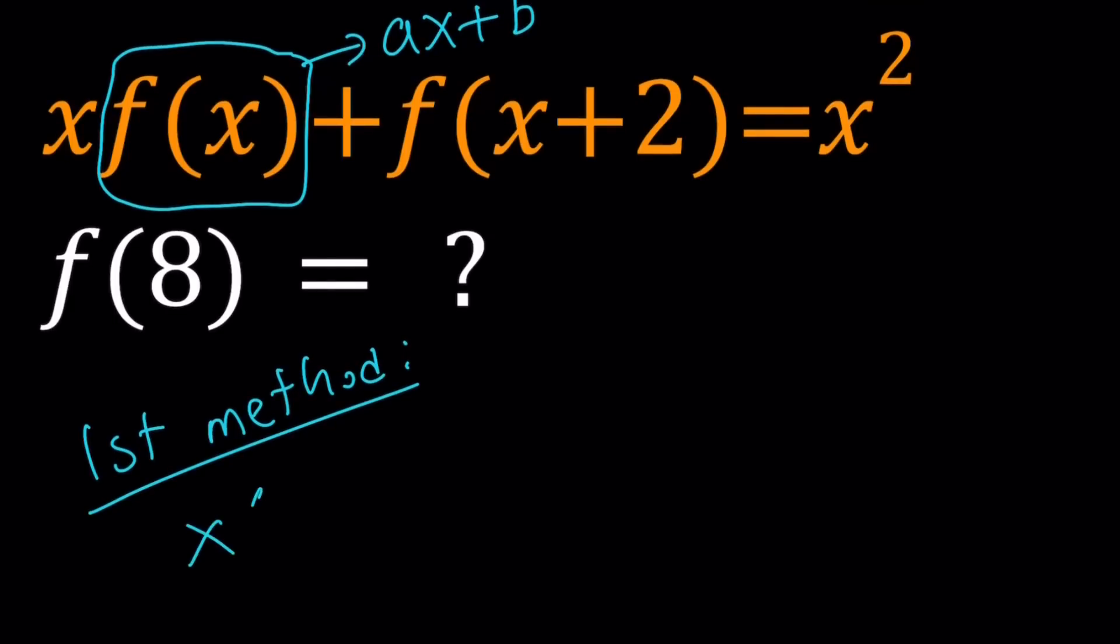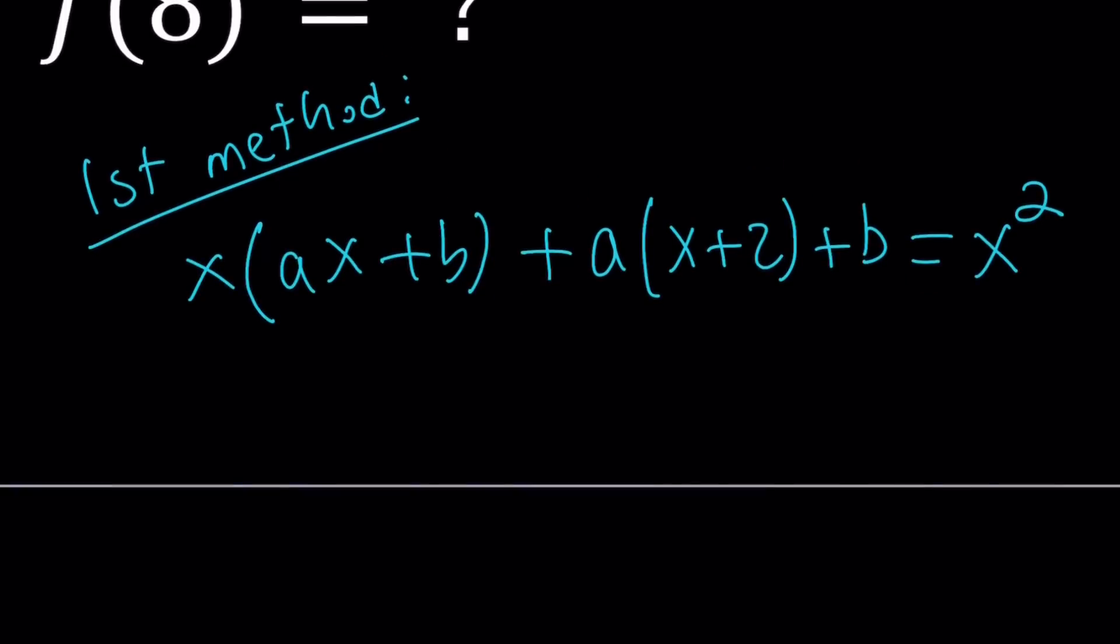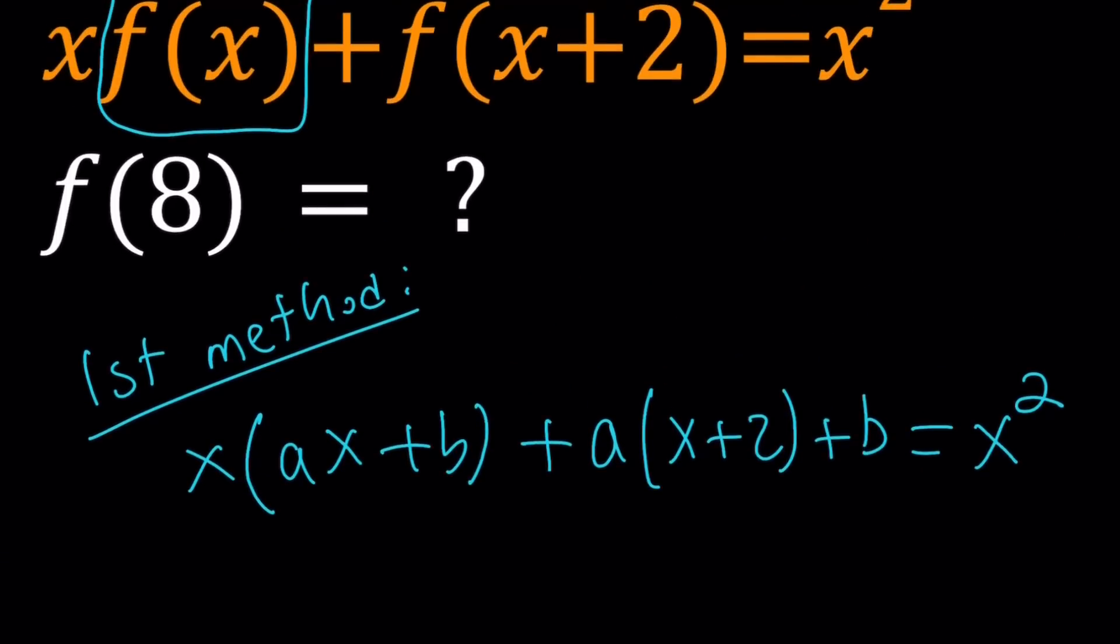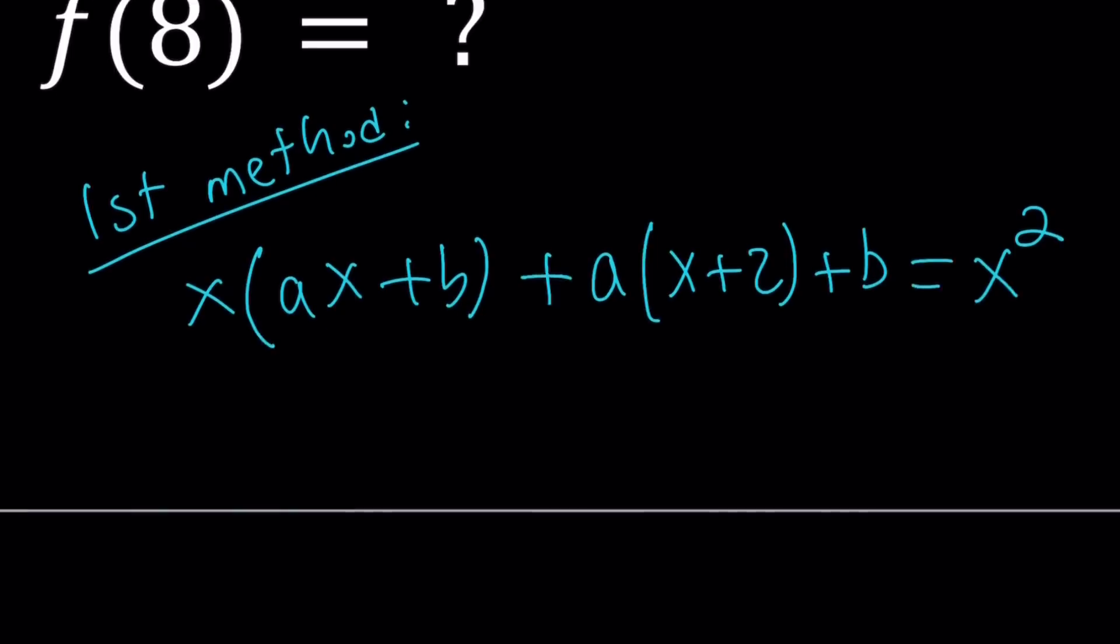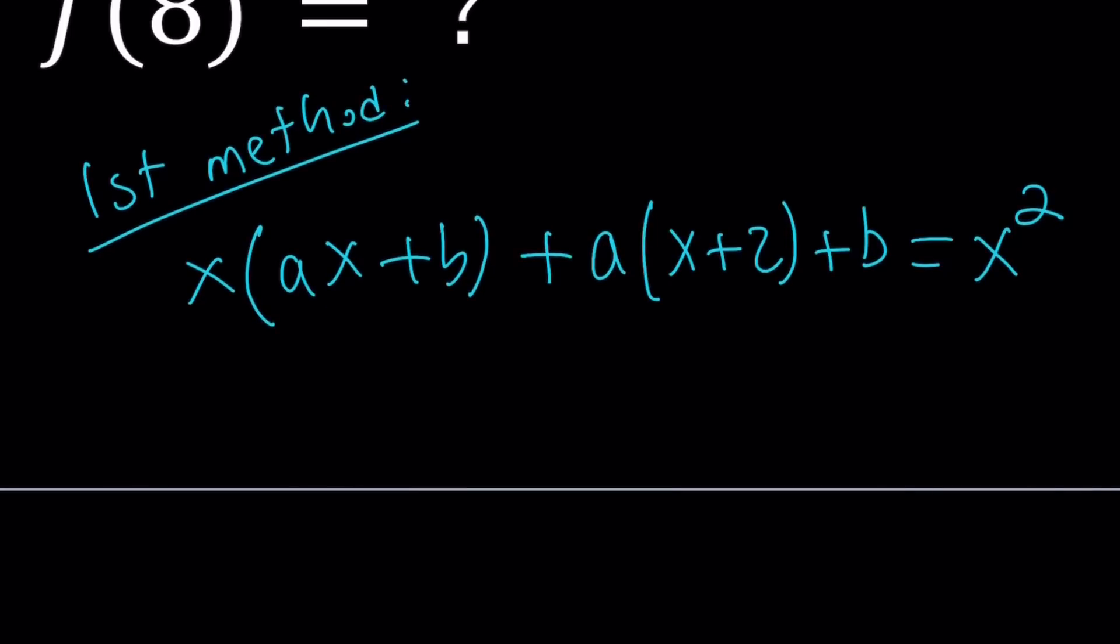So f of x is going to be ax plus b. Replace it with that. And f of x plus 2 means just replace the x with x plus 2 in f of x, and then set the whole thing equal to x squared. Now I'm going to try to find the a and b values from here. If I can find an expression for f of x, then I can plug in 8 and find f of 8. But wait for my second method, because that's going to be more fun.